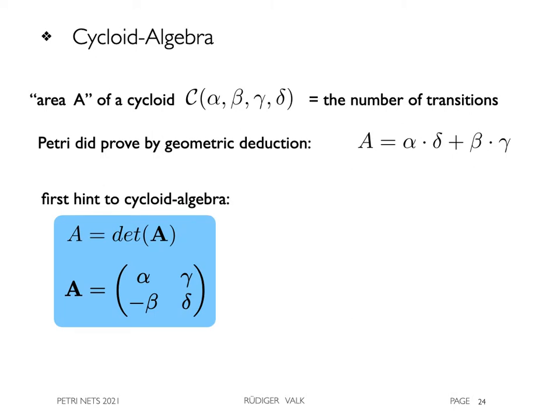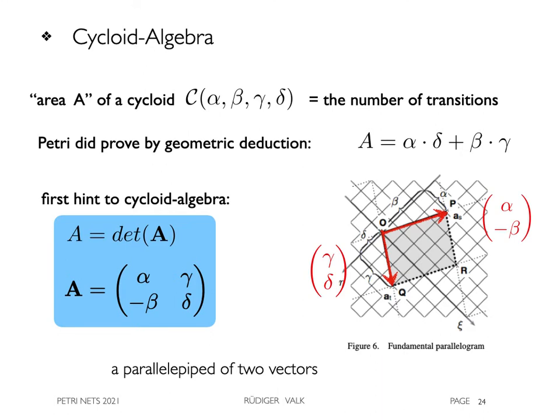In an earlier paper, we mentioned that it is the determinant of the matrix A. It is a special case of the number of elements of a parallel epipede, spanned by two vectors here, alpha minus beta and gamma delta.